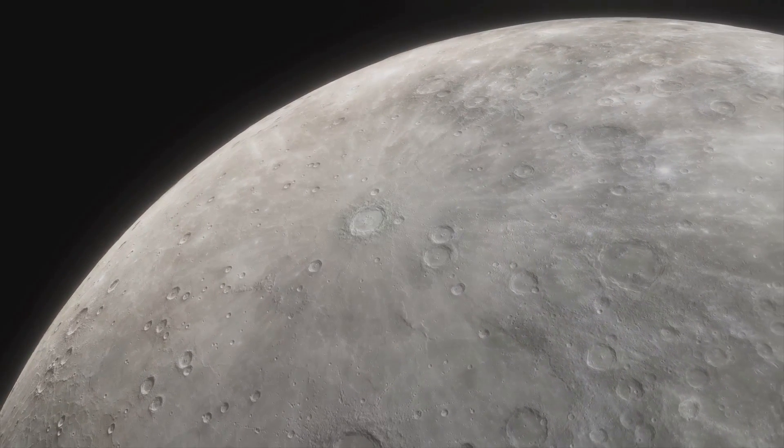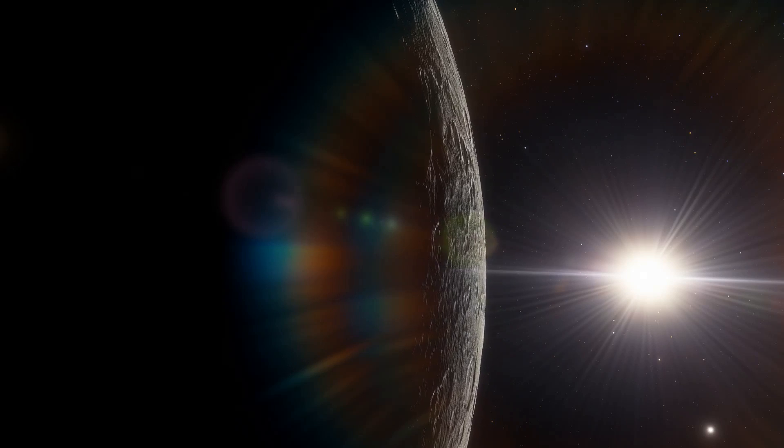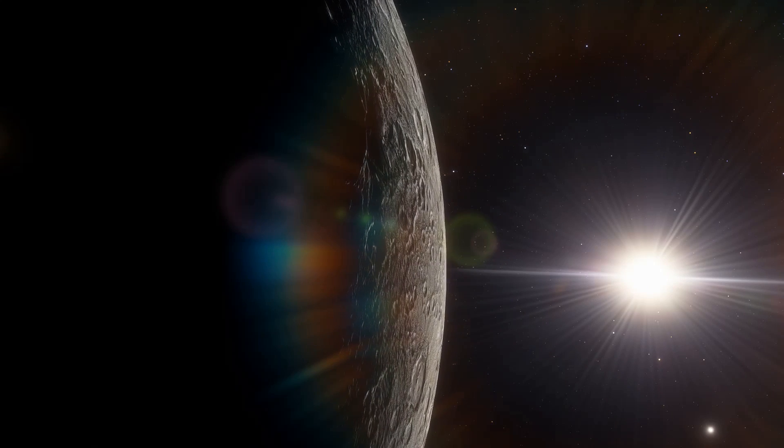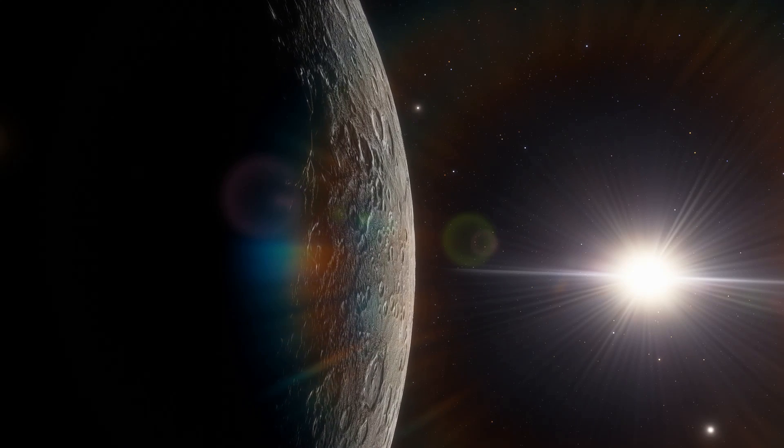Now picture this. You're standing on the surface of Mercury and you notice something peculiar about the Sun. It seems to move in a leisurely fashion across the sky, taking its own sweet time to rise and set. Why is this, you wonder?